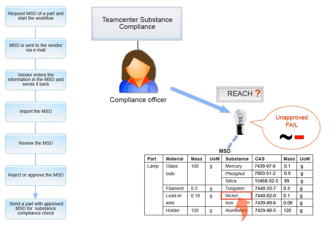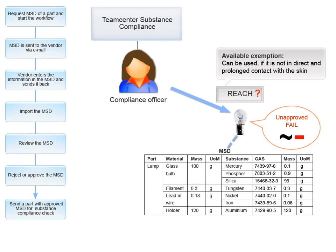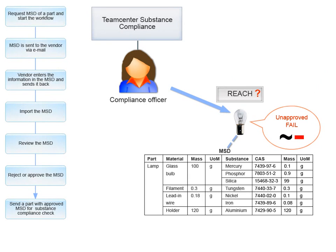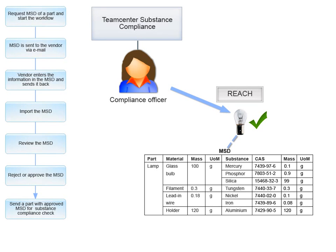However, REACH has an exemption that allows nickel to be used if it is not in direct and prolonged contact with the skin. As the nickel used in the lamp is not in direct contact with skin, you apply the exemption and change the Substance Compliance status of the lamp to Approved Pass. The lamp can now be used in REACH compliant products designed in Teamcenter.